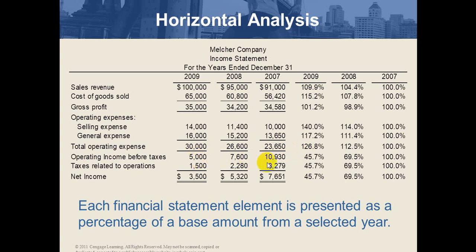For operating income before tax in 2009: 5,000 divided by 10,930 equals 45.7%. Tax: 1,500 divided by 3,279 equals 45.7% as well. Net income after tax: 3,500 divided by 7,651 equals 45.7%. We will comment on these numbers shortly.